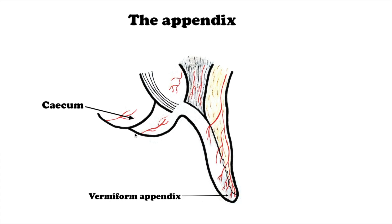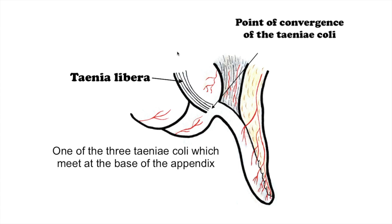Here we can see taenia libera, or free taenia, one of the three taenia coli which meet at the base of the appendix. The bands of taenia coli converge at the root of the vermiform appendix and correspond to the surface marking known as McBurney's point on the abdomen. This point roughly matches the most common location of the base of the appendix where it is attached to the cecum.